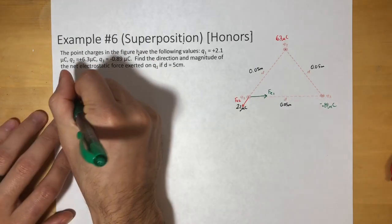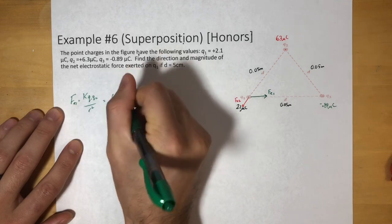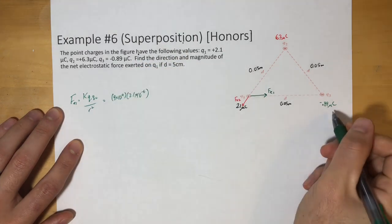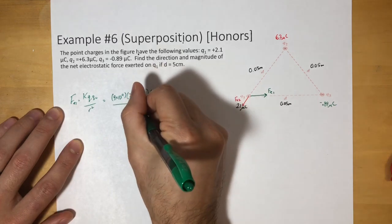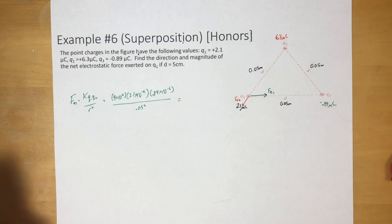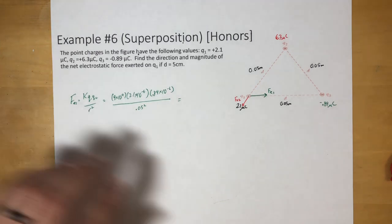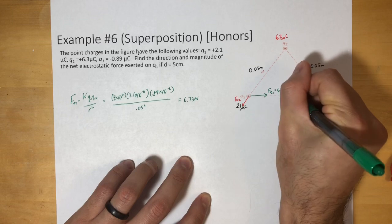For F_E1, using Coulomb's law: K × Q1 × Q3 / r² = (9×10⁹) × (2.1×10⁻⁶) × (0.89×10⁻⁶) / (0.05)². Entering that into the calculator gives us 6.73 Newtons. So Q3 is pulling Q1 in with 6.73 Newtons.